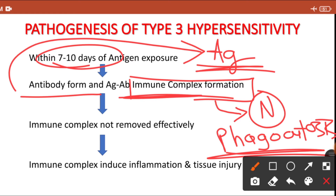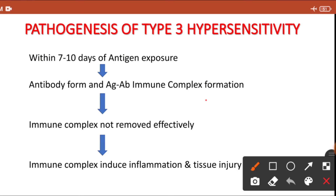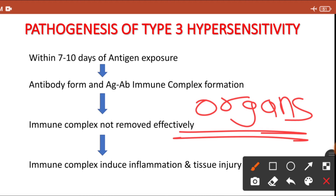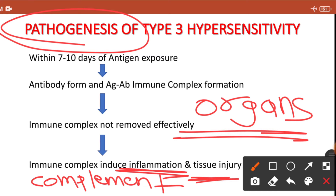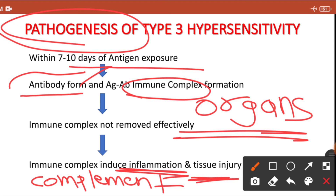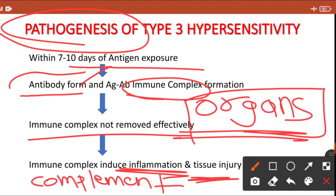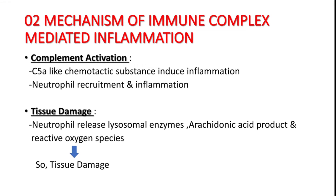In a susceptible person, the immune complex will not be removed effectively, and so they get deposited in organs — in kidney, joints, liver, and blood vessels. Because of this deposition they activate the complement, and because of complement activation the patient will have inflammation and tissue injury. The complete pathogenesis: antigen exposure → antibody formation → immune complex formation → if not removed by phagocytosis → deposition in organs → complement activation → inflammation and tissue injury.